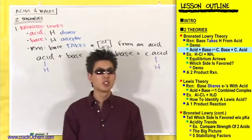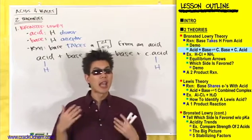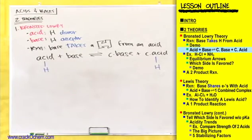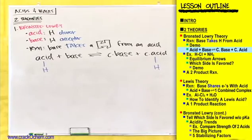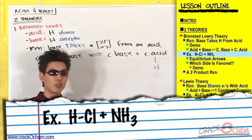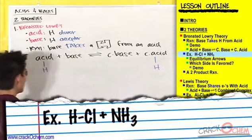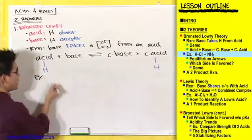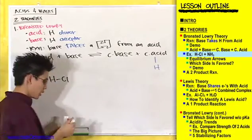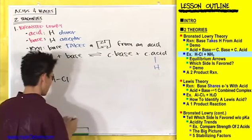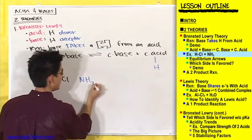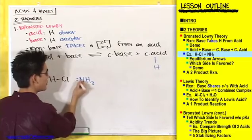But enough theoretical examples, let me show you an actual example now. So for example, let me just throw in some HCl with some NH3 and let me draw this nitrogen lone pairs nice and big.